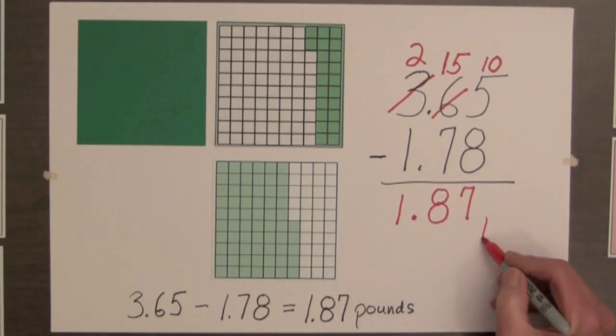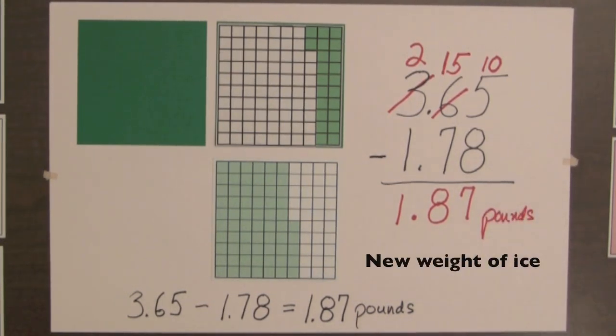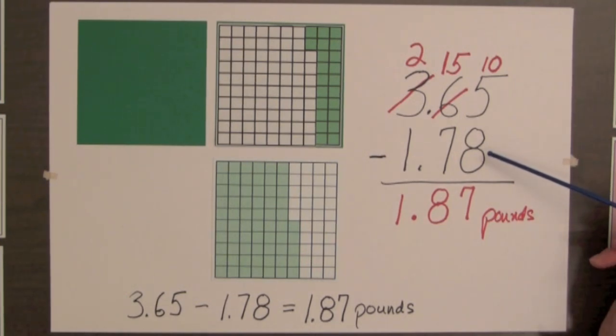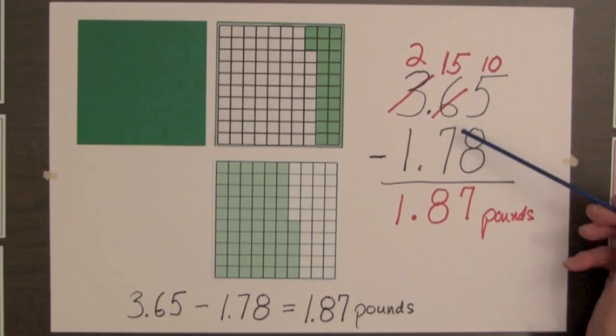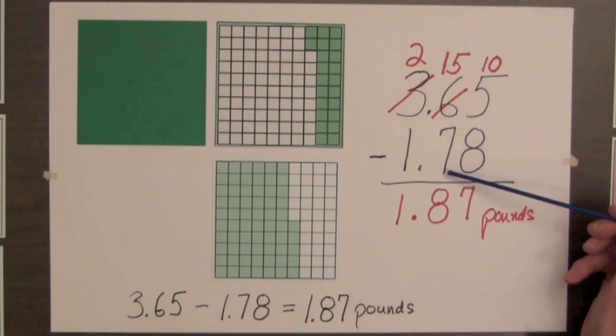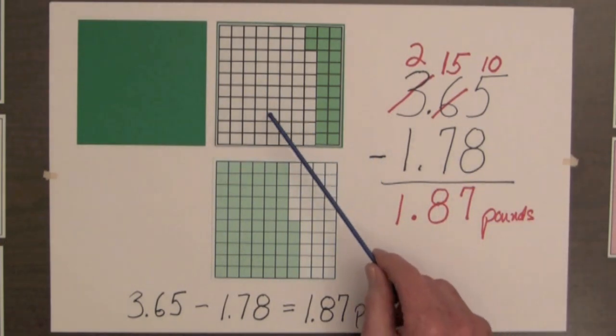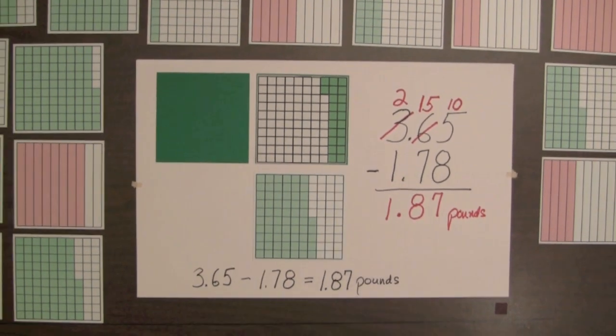So 1 and 87 hundredths is the new weight of the ice. Notice in the algorithm that we subtracted the hundredths digits and then the tenths digits. But in using the squares, we subtracted 78 hundredths in one step.